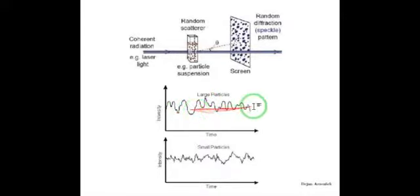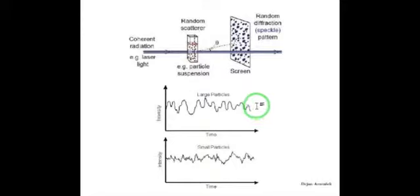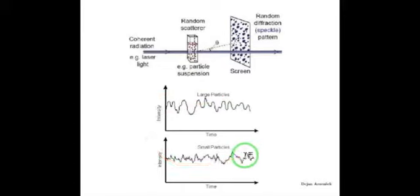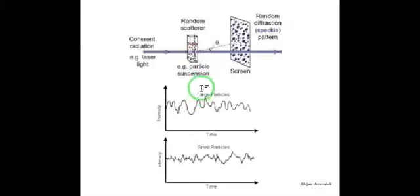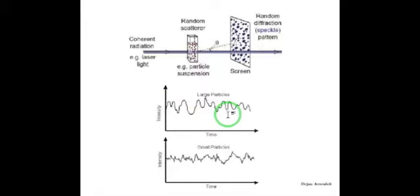You see slower changes in the intensity of the scattered light for larger particles. These two randomly measured intensity signals may at first seem to give you no information about size, but they are the key and most important elements for our analysis. The slow pattern in the change of intensity is exactly caused by the larger size of the particles, while smaller particles produce more rapidly changing patterns. These two patterns differ precisely due to the difference in particle size.